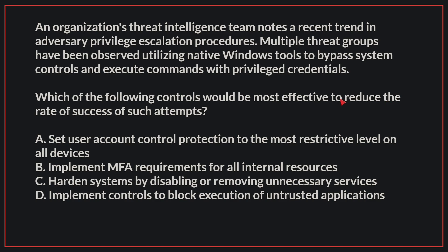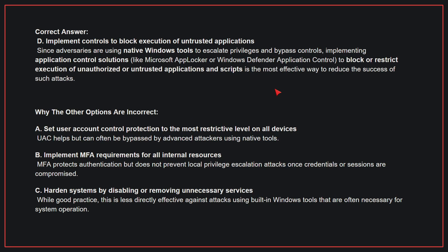The correct answer is D: implement controls to block execution of untrusted applications. Since adversaries are using native Windows tools to escalate privileges and bypass controls, implementing application control solutions to block or restrict execution of unauthorized or untrusted applications and scripts is the most effective way to reduce the success of such attacks.